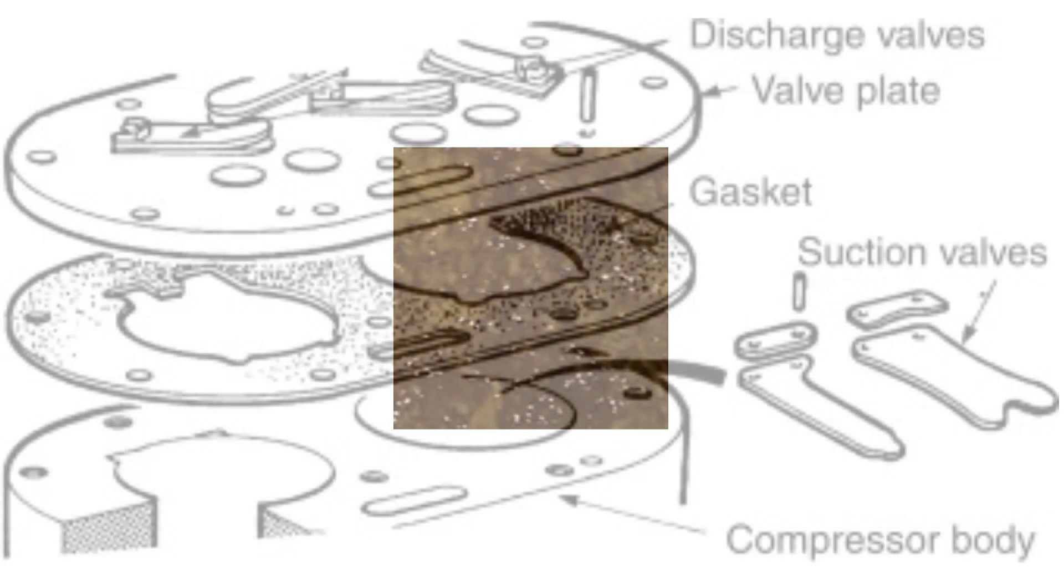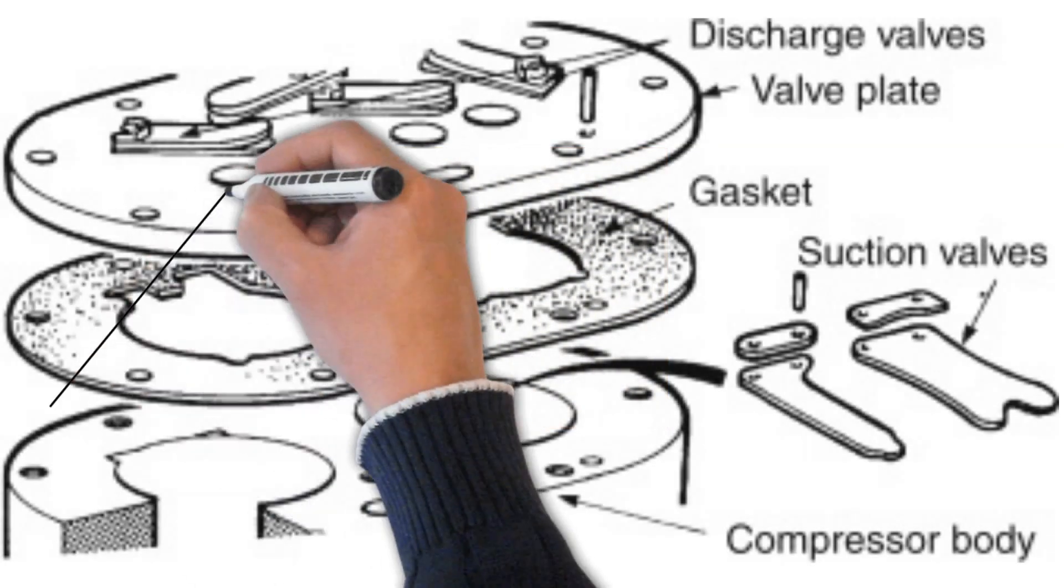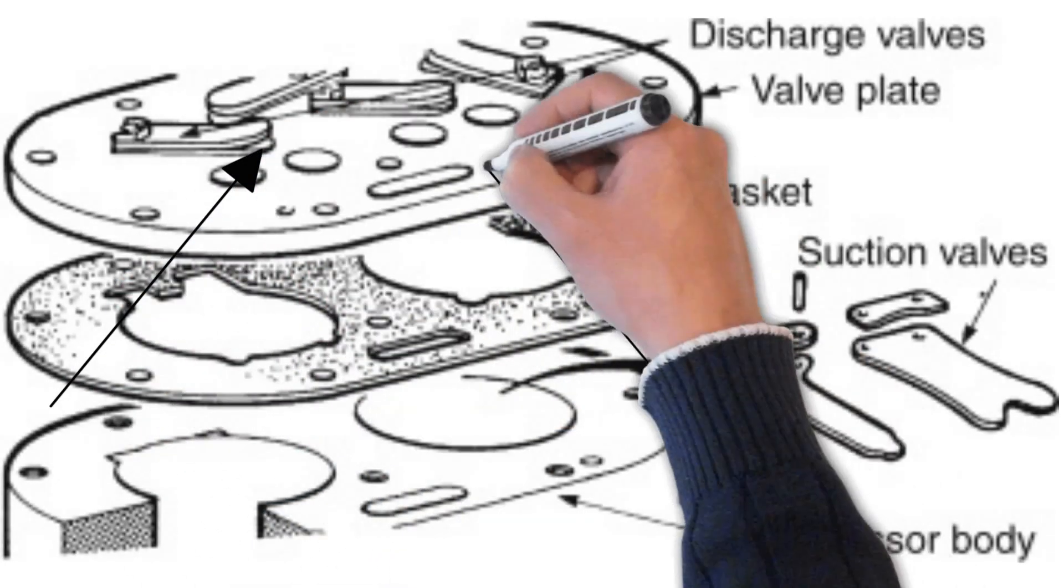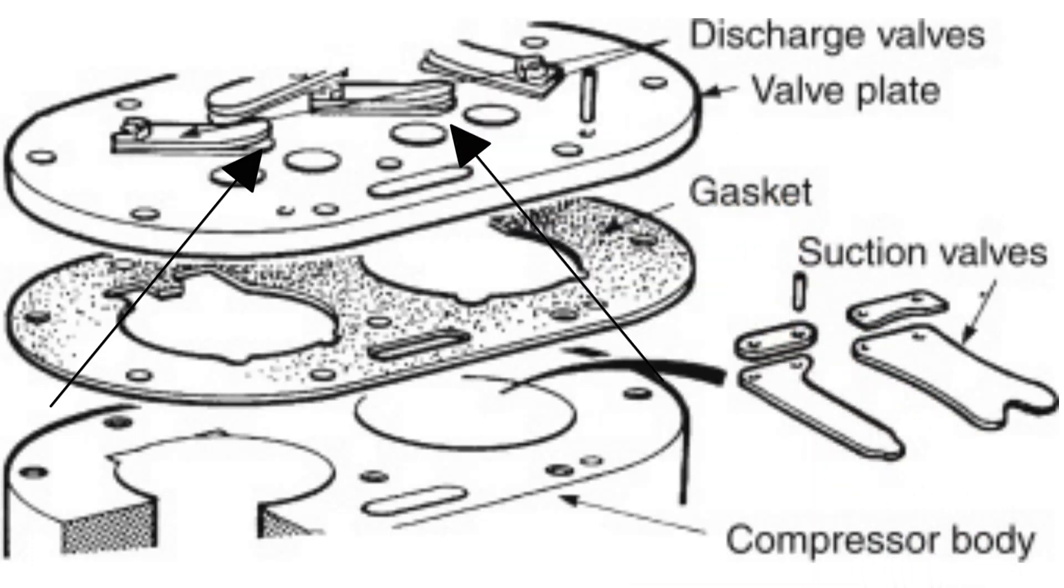This sludge tends to collect in hotter areas, usually the exhaust valve plate, and if allowed to build up, can prevent the exhaust valves from closing properly.